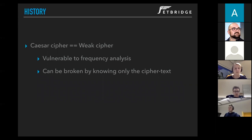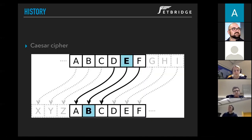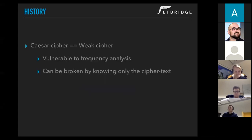Caesar cipher is pretty weak since it's vulnerable to frequency analysis. As we see here, each letter is always encrypted to a certain other letter. So if we know that, for example, in English the most frequent letter is E, and if we have a long enough ciphertext, we can count the occurrences of each letter and do the mapping — and it will give great results.